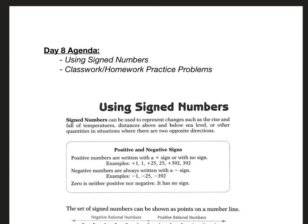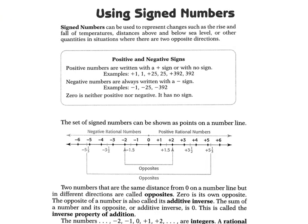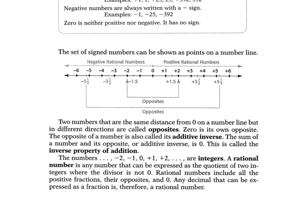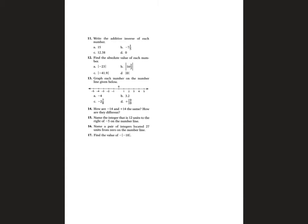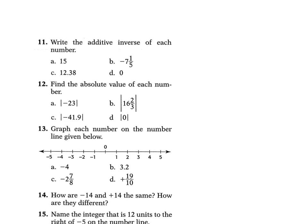Day 8, using signed numbers. So, signed numbers — we're working with integers, so positive and negative numbers. You want to realize that opposites are literally a positive number and its negative counterpart. When we are working with the inverse of numbers, which is just writing the opposite, finding the absolute value — which is just the positive number inside the absolute value bars — graphing numbers on a number line, telling how numbers are the same, how they are different, and so on.